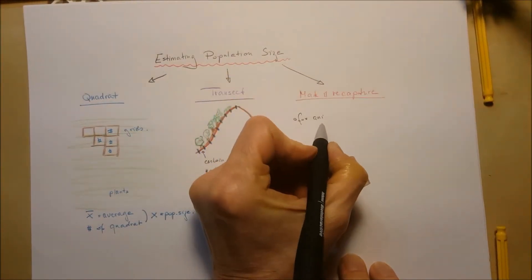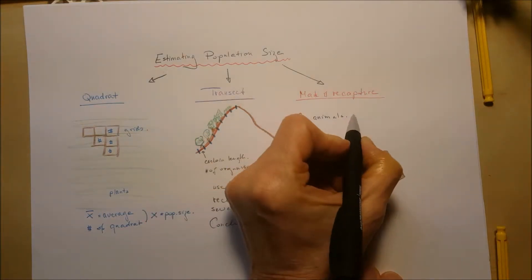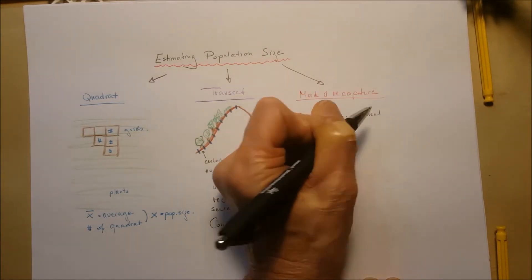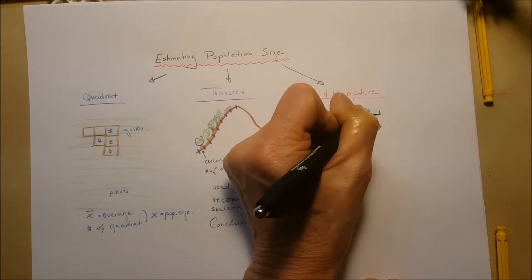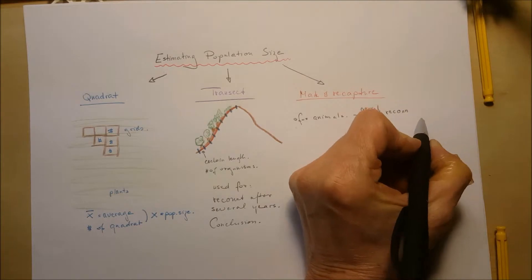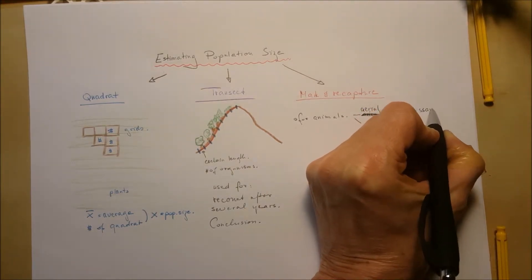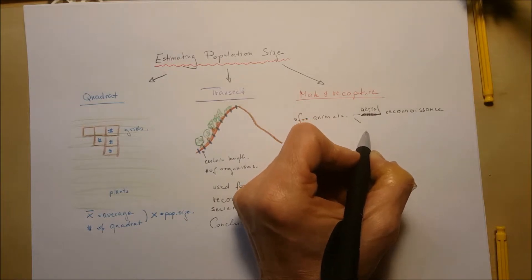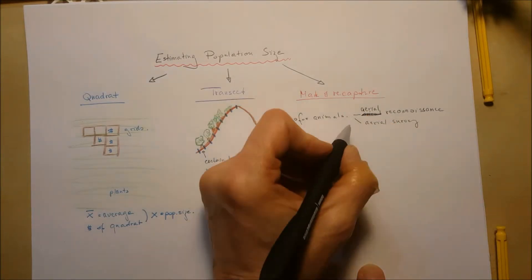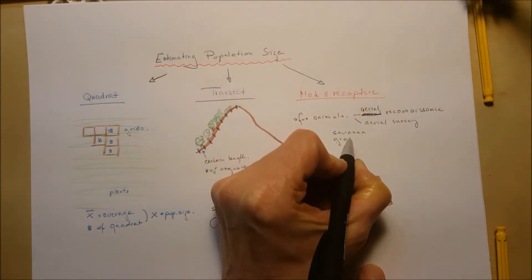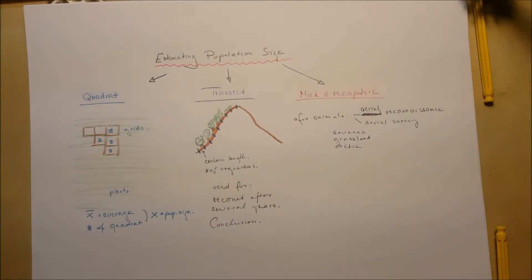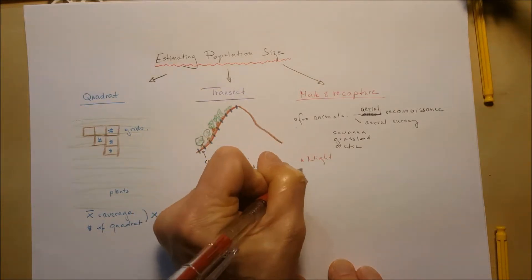The mark and recapture method is for animals. For animals, we usually use aerial reconnaissance — from an airplane just taking pictures. It's really good for savannah, grassland, and arctic places where bigger organisms can be seen, for example, counting buffaloes or elephants. But for nocturnal organisms, sea creatures, or tiny organisms in forests, we need a different approach.